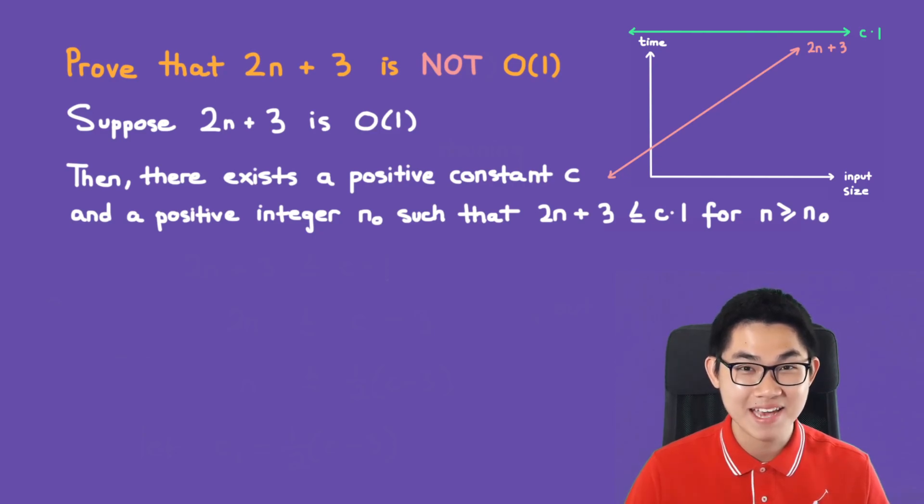Already, you see something that doesn't make sense. So here, c times 1 is just a constant, right? And over here, 2n plus 3 is a linear function. So how can a linear function be less than a constant? It's supposed to be the other way around. So this is a contradiction.